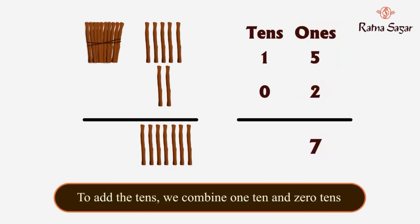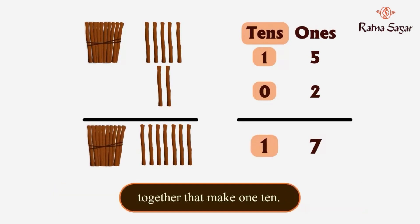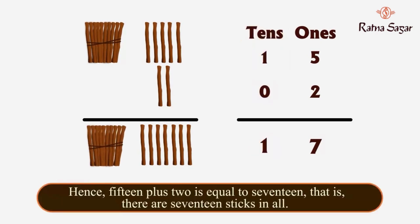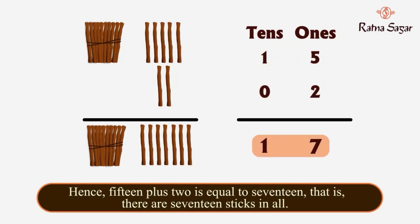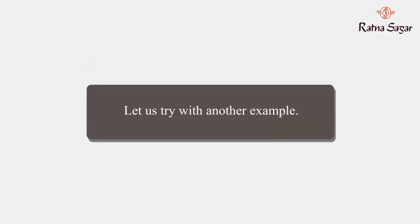To add the tens, we combine one ten and zero tens together — that makes one ten. Hence, 15 plus 2 is equal to 17. That is, there are 17 sticks in all.